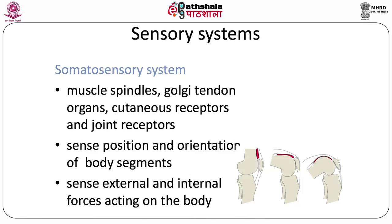The somatosensory system consists of mechanoreceptors distributed across the body — in the skin, muscles, tendons, and joint spaces. Muscle spindles sense muscle tension and tone. Joint receptors signal joint position and range of movement. Tendon and connective tissue mechanoreceptors measure passive and active stresses. Somatosensory information is integrated by the central nervous system to give a complete internal model of the body — a neural representation of body segment orientations relative to each other.